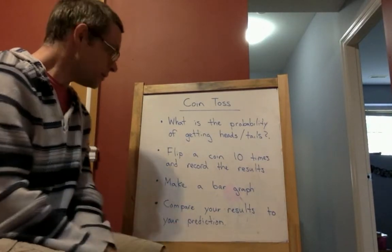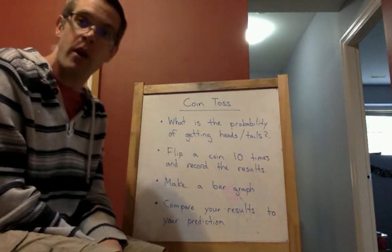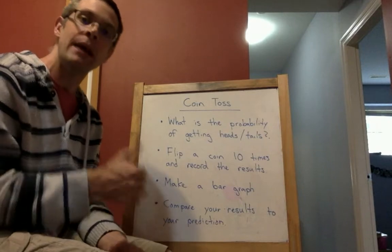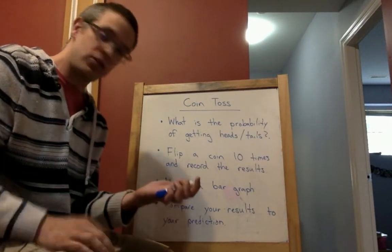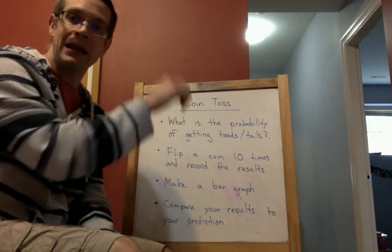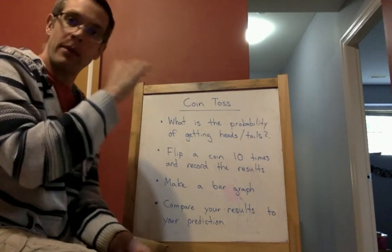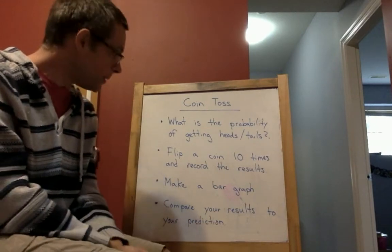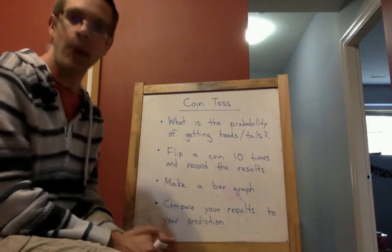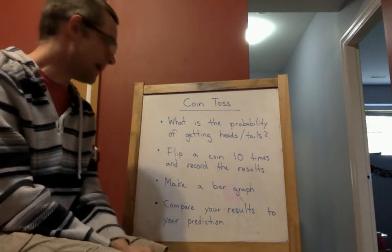When you've made your prediction, then I would like you to do the experiment. The experiment in this case is flipping a coin 10 times. And every time you flip the coin, when you see, for example, I get heads, I'm going to write really quickly, I'm going to make a tally, heads, flip again, tails. I'm going to be recording each time I flip it, so I have my data collected. I'm going to do that 10 times, not less than 10, not more than 10, we're all going to do 10 times.